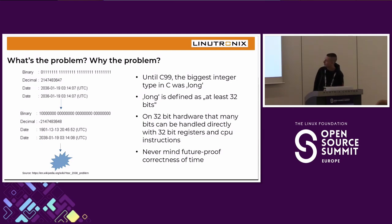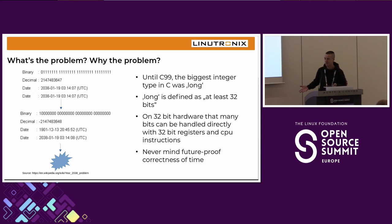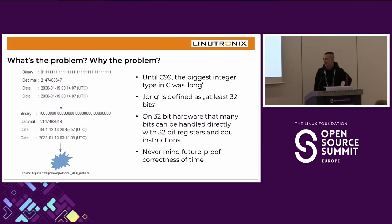So what is the problem? Until quite recently, the biggest integer type you could use in C was called `long`, and `long` is defined rather loosely as containing at least 32 bits. On 32-bit systems that's exactly how many bits it contains, because integer types in C are recommended to map directly to hardware, and 32-bit hardware can manipulate a maximum of 32 bits with CPU instructions. At the time, nobody thought this was not future-proof — and it will actually overflow in 2038. You can see what happens on the left side: we run out of bits and the whole thing flips over.